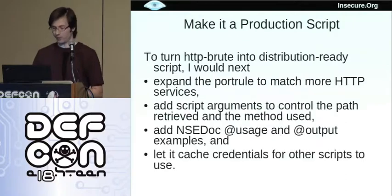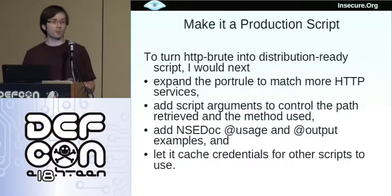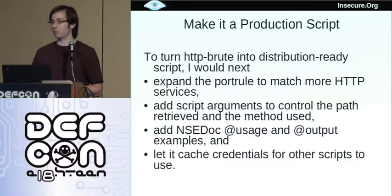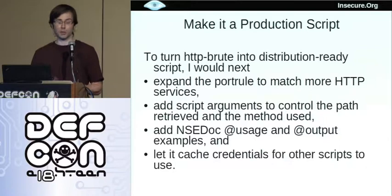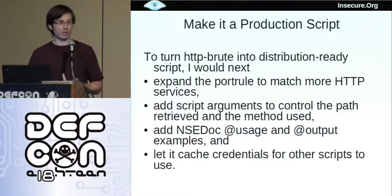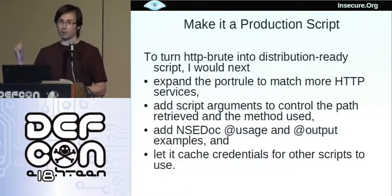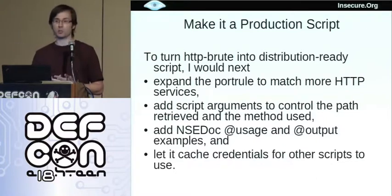I made this script very small so it could be understood in a short time. Before I add this script to Nmap, there are a few changes I'm going to make. The port rule has to be more generic — it's lame to just match port 80. I want to match all the common HTTP ports and also any ports that version detection has found to be HTTP. We have a library called shortport that makes that very easy. I would add script arguments so we don't have to hard-code cam.jpeg — you can specify that on the command line. Add documentation for usage and output so it can go on our online documentation portal. And finally, most importantly, I want it to cache credentials in our registry so that other scripts that run later through our dependency system have access to these.